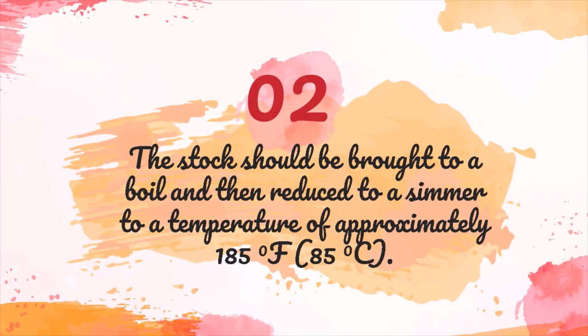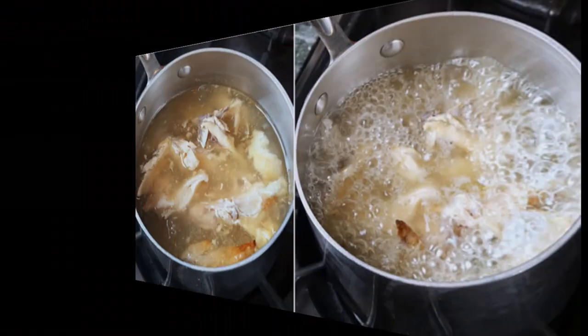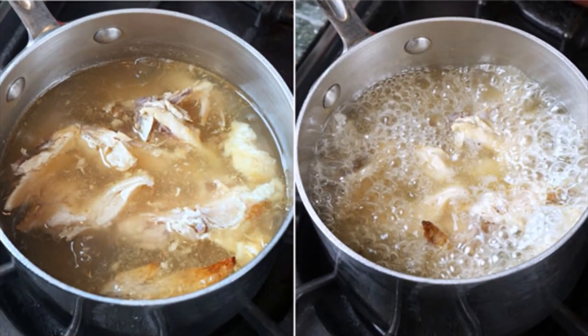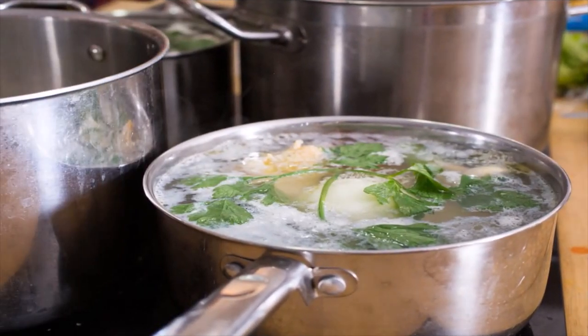Number 2, the stock should be brought to a boil and then reduced to a simmer to a temperature of approximately 185 degrees Fahrenheit or 85 degrees Celsius. While simmering, the ingredients release their flavors into the liquid. If kept at a simmer, the liquid will remain clear as it reduces and a stock develops. Never boil a stock for any length of time. Rapid boiling of a stock, even for a few minutes, causes impurities and fats to blend with the liquid, making it cloudy.